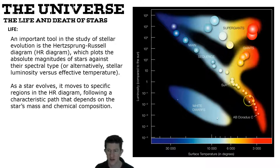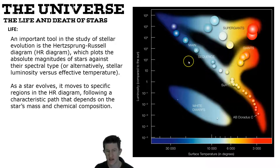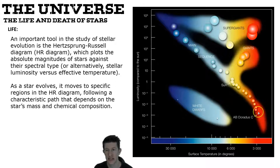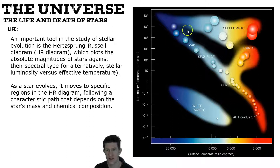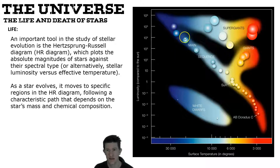Cooler stars are red and much hotter stars are actually blue. Red is the lowest frequency, lowest energy light — this is also why infrared gets trapped in our greenhouse effect, as it doesn't have enough energy to punch back out through the atmosphere. Blue and ultraviolet light from the sun can get through easily because they have so much energy.